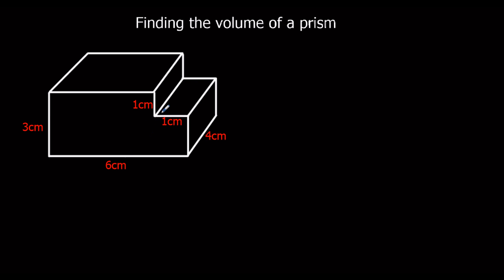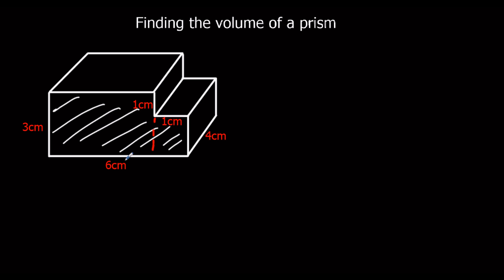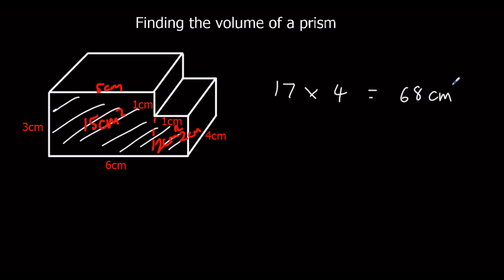Here we've got another prism. We've got to work out the area of this front shape — the area of the cross section — and multiply by how far back it goes. We've got 6 the whole way along the bottom, 1 here so there's 5 centimeters here, and 3 the whole way down the side, 1 here so another 2 centimeters here. The area of the bigger shape is 5 times 3, which is 15. The smaller shape is 1 times 2, which is 2. So the area of the cross section is 17 centimeters squared. It goes back 4, so the volume is 17 times 4, which is 68 centimeters cubed.